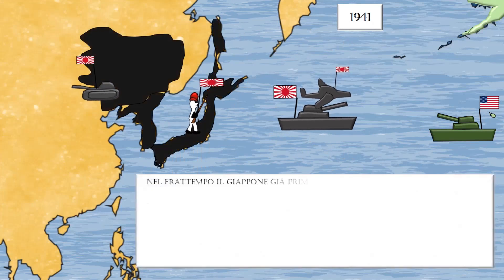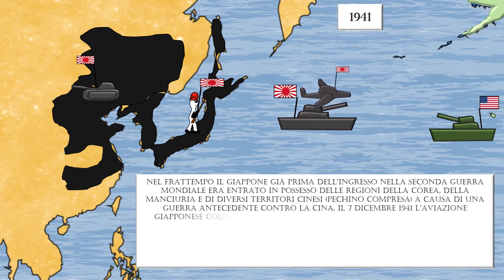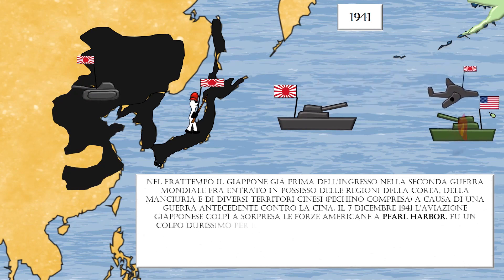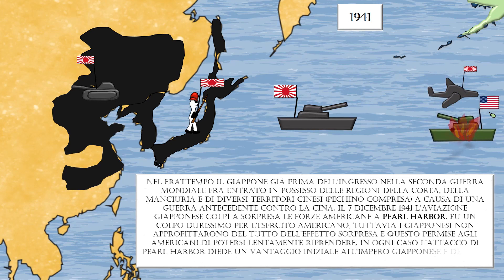Japan, already before entering World War II, had taken possession of Korea, Manchuria, and several Chinese territories, including Beijing, due to an earlier war against China. On December 7, 1941, the Japanese Air Force struck American forces at Pearl Harbor by surprise. It was a tremendous blow to the US military. However, the Japanese did not take full advantage of the surprise effect, allowing the Americans to slowly recover. Nonetheless, the attack decreed the entry of the United States into the war.